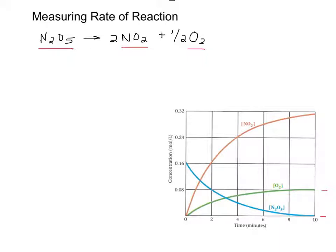If we look at the coefficients in the equation, we've got a 1, a 2, and a half. So if you look at the 2 and the half, does it make sense that the NO2 might increase four times faster than the O2 increases? And that the NO2 might increase twice as fast as the N2O5 decreases?